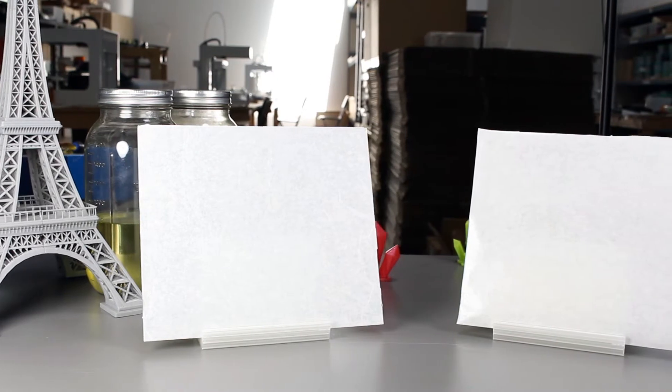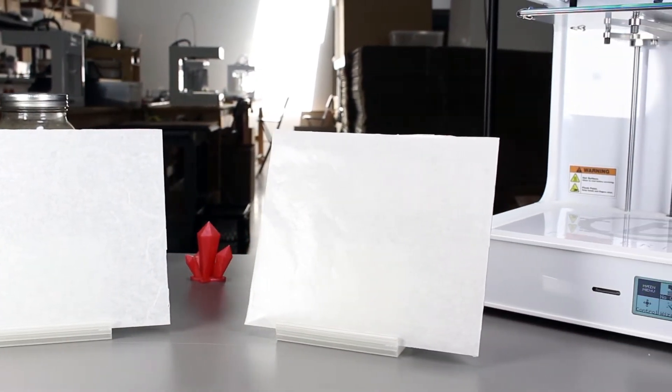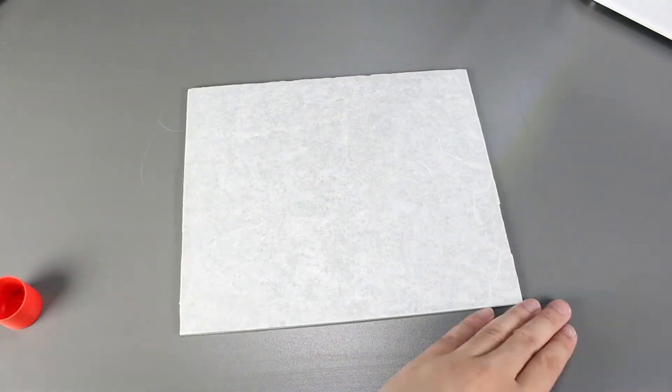So all I did was just cut out the vinyl transfer tape to match our glass plate and then I stuck it on. Afterwards, we have to apply a layer of glue stick on it and then we can try it out.